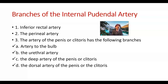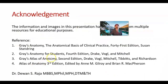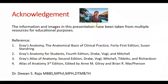The artery of the penis, or common artery of the penis or clitoris, has the following branches: the artery to the bulb of the penis, the urethral artery, the deep artery of the penis or clitoris that passes through the corpus cavernosa deep inside, and the dorsal artery of the penis or clitoris that passes over the dorsal surface of the penis or clitoris and also supplies the glans penis area. That concludes the anatomy of the internal pudendal artery.